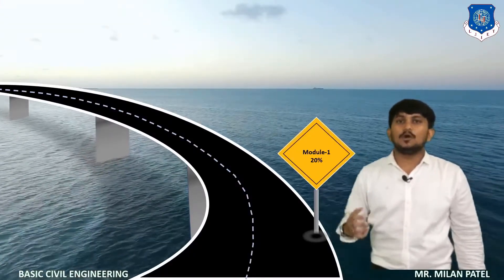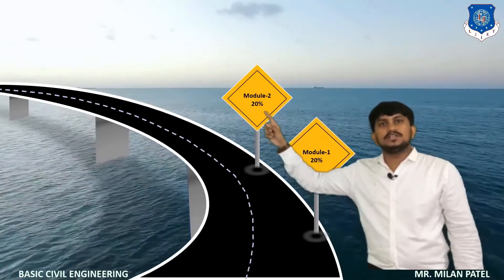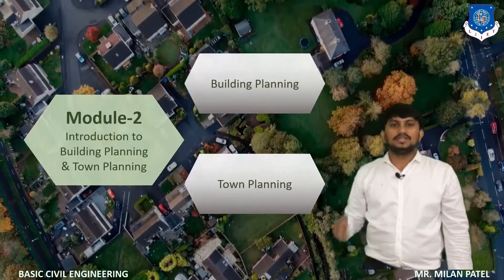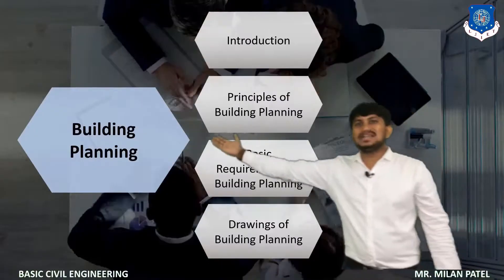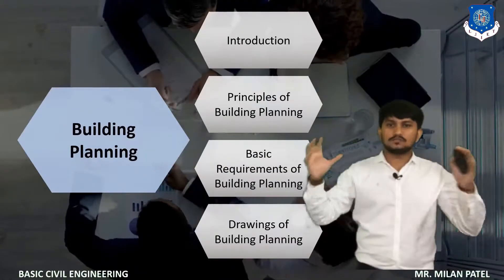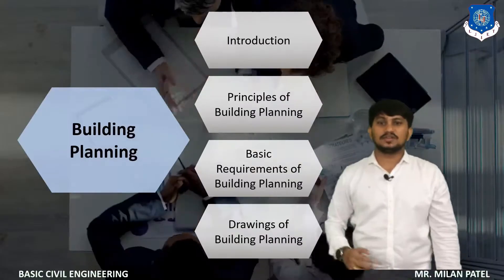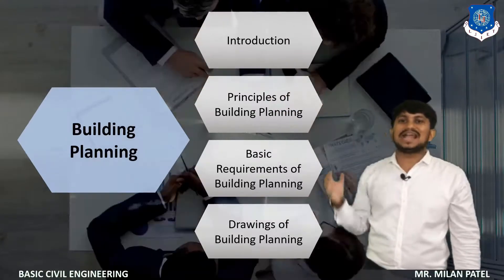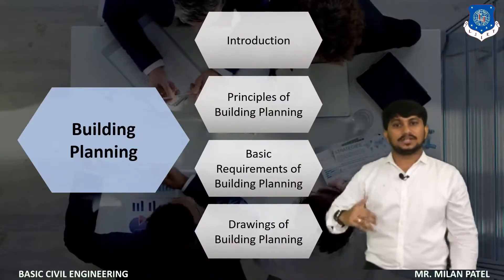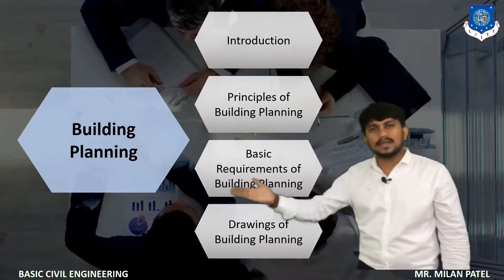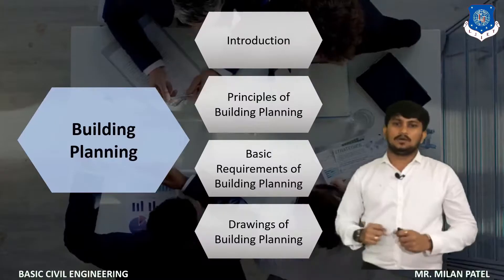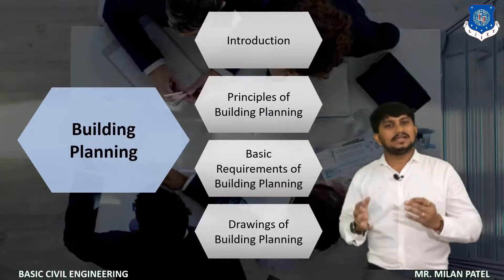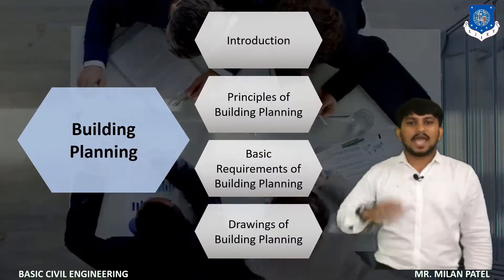Now I will give you an overview of Module 2, where the weightage is also 20%. Module 2 is all about building planning and town planning, divided into two separate topics. Can we build any structure without planning it? No. So we have to understand the basic principles of planning and guidelines from city authorities. Even after understanding all guidelines and principles, we have to first identify the basic requirements of building planning, and draw out all requirements of occupants to start implementing principles for the final building plan.